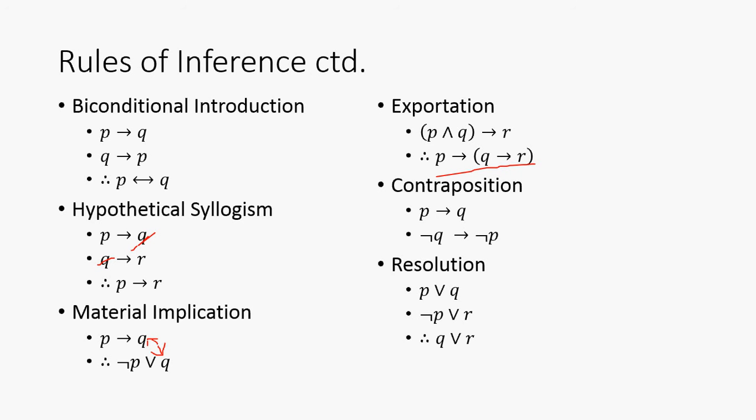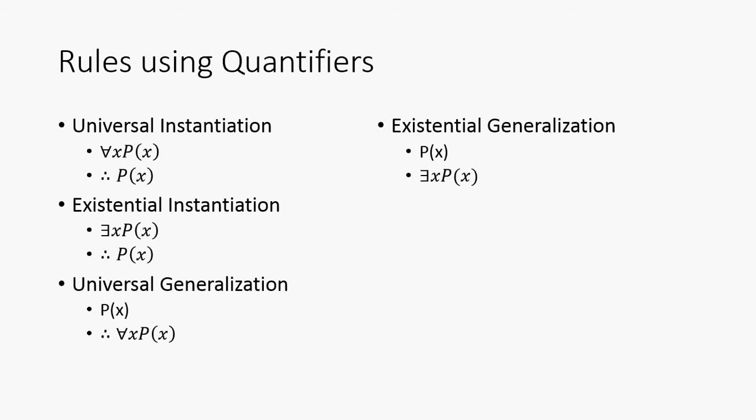Contraposition, we discussed that earlier. And then resolution: P or Q and not P or R. We can eliminate the P because its opposite is present in the next premise, right? So, Q or R.